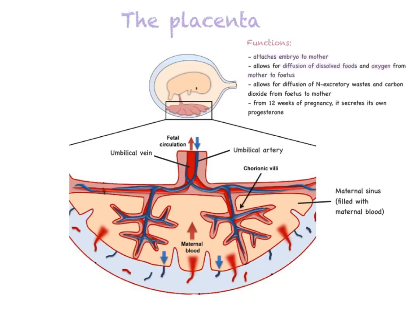The fetus isn't eating — it relies on the mother's food intake and digestive system to have dissolved glucose, amino acids, and oxygen in her blood. When the mother's blood comes into close contact with the fetus's blood, those nutrients diffuse across into the fetus. In the other direction, the fetus produces nitrogenous excretory waste and carbon dioxide through cellular respiration, and the placenta allows those waste products to diffuse from fetus to mother, so the mother excretes her fetus's waste as well as her own.